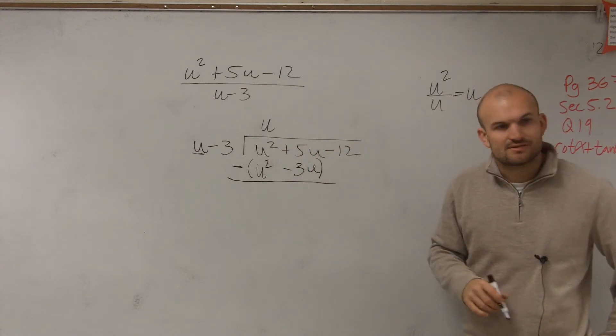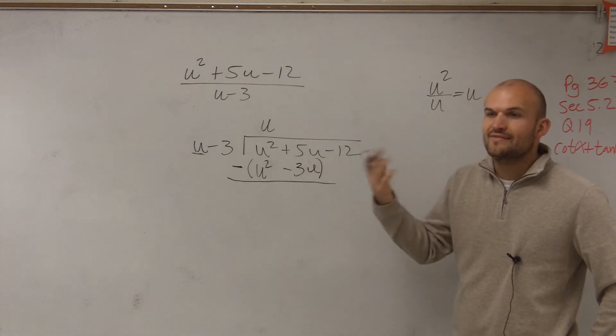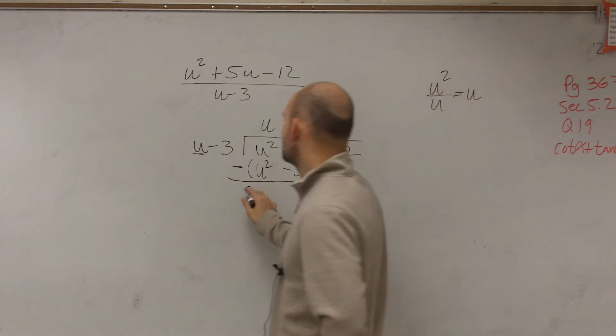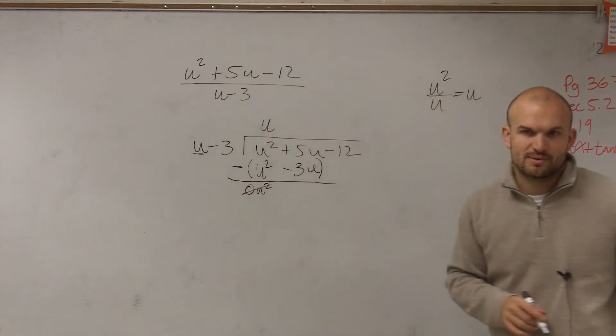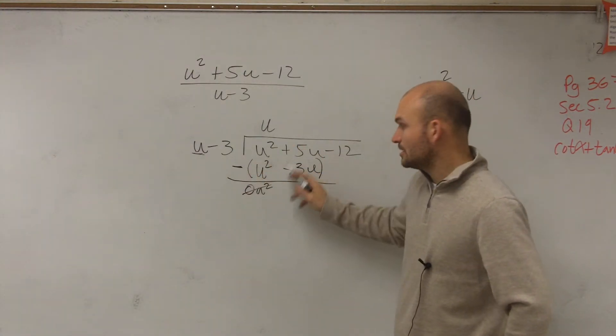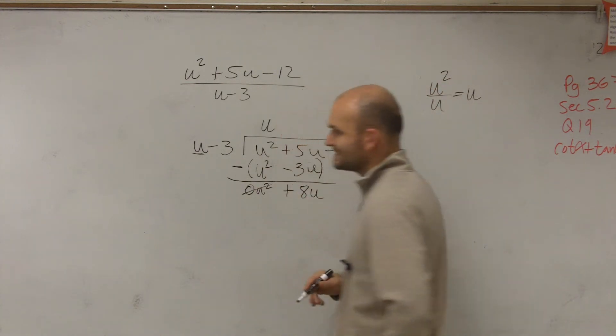I'm putting parentheses around there for you to remember that you have to subtract both of these terms. And then I say it out loud: u squared minus u squared is 0u squared. So 5u minus a negative 3u, double negative, is now going to produce a positive 8u.